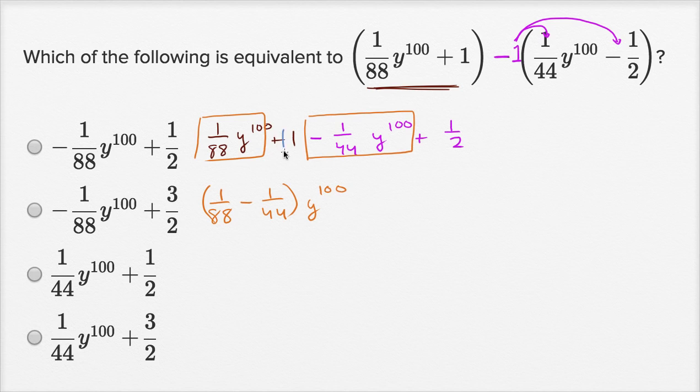So that's pretty straightforward. You have plus 1 plus 1 half, so it's going to be plus 3 halves. And now we just have to figure out what this is.